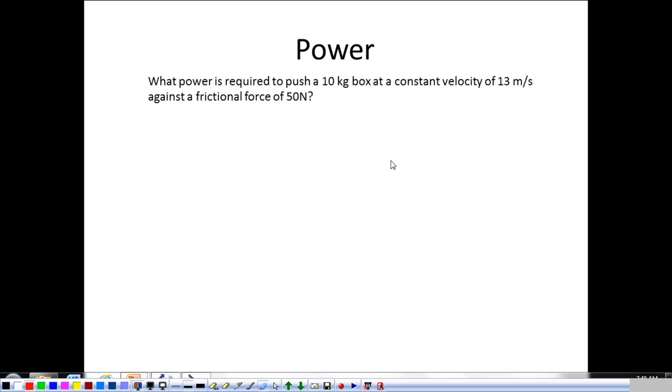Last one. And then we're done. What power is required to push a 10 kilogram box at a constant velocity of 13 meters per second against a frictional force of 50 newtons? All right. Draw my box. It's 10 kilograms. We got 100 newtons down. This is the force of gravity. We have a normal force of 100 newtons up. And if we're going this way at a constant 13 meters per second, we know that there's a frictional force of 50 newtons. We'll say that that's equal to friction.